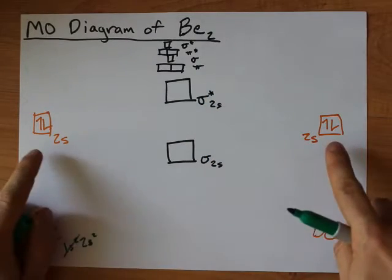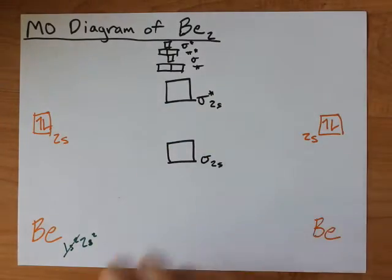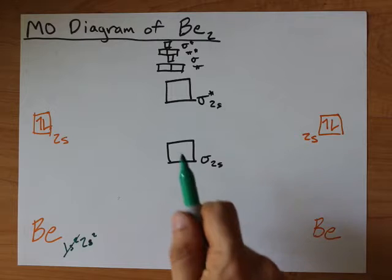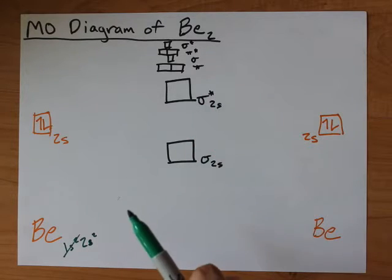Now the 2s atomic orbitals interact to create two molecular orbitals. One is a sigma 2s bonding orbital, the other is a sigma 2s antibonding orbital.